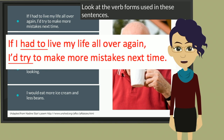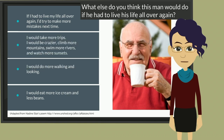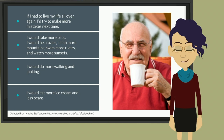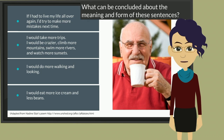If I had to live my life all over again, I'd try to make more mistakes next time. What else do you think this man would do if he had to live his life all over again? So, what can be concluded about the meaning and form of these sentences?